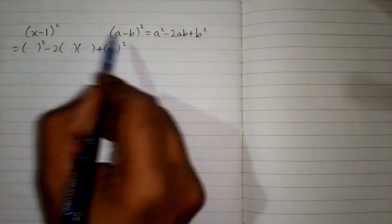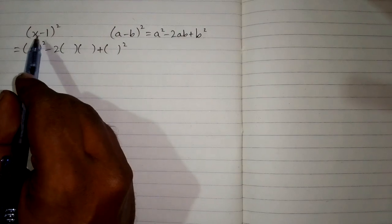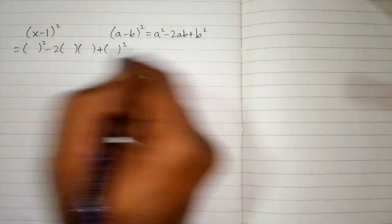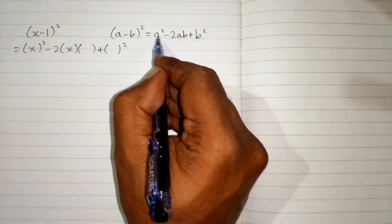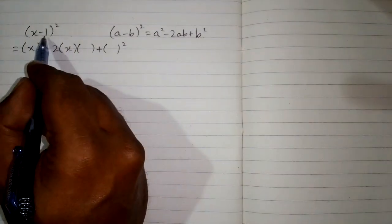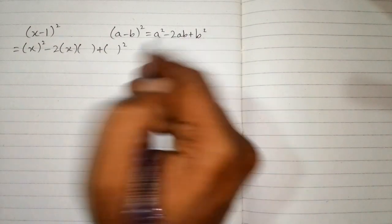Now we can see that we have x in place of a and 1 in place of b. So we put x over here and over here because we have a in these places and then we put 1 in place of b. So we put 1 over here and over here.